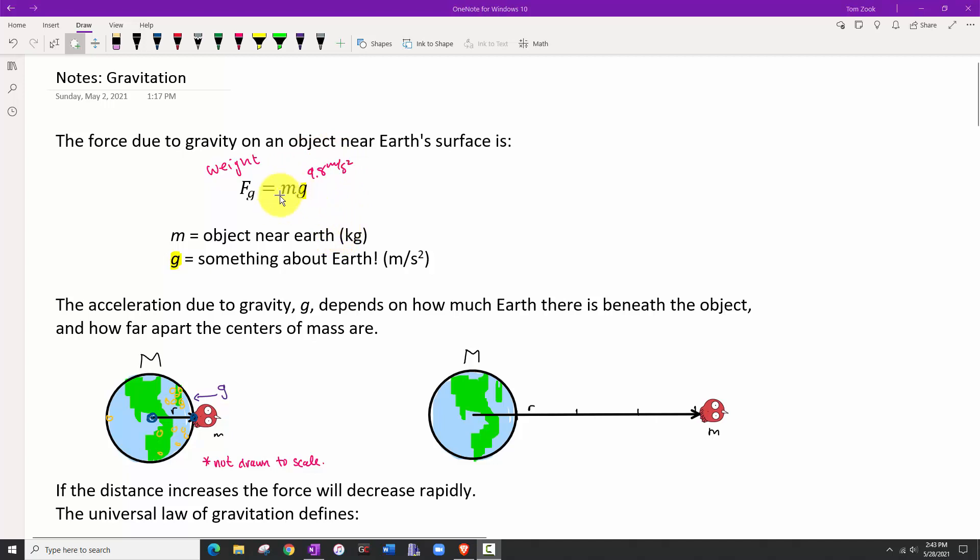So that m is the object near Earth, and g had to be something connected to the Earth. Something about the Earth was causing that 9.8, and it was always constant because we're always pretty close to the Earth, as we can see here with octocorn sitting on the surface of the Earth, not trying to scale.